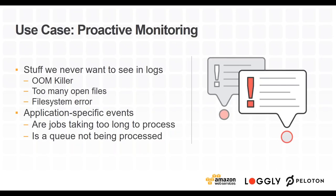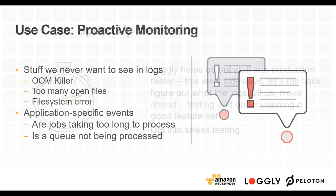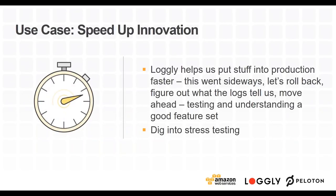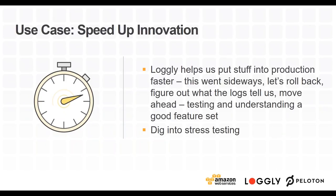One really nice thing Loggly lets us do is: when someone identifies a reproducible bug in production, you roll back, then go look in the logs to figure out exactly why it went sideways and why you didn't catch it. If you can reproduce it, you may add logging to understand more about what's going on in your application, so that if there's a recurrence of that bug or it's hard to reproduce, you have logging in place to understand what's happening.